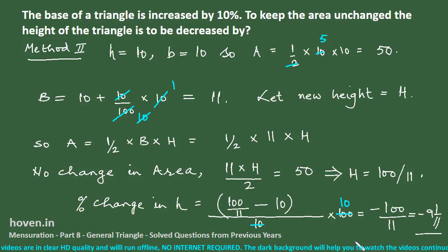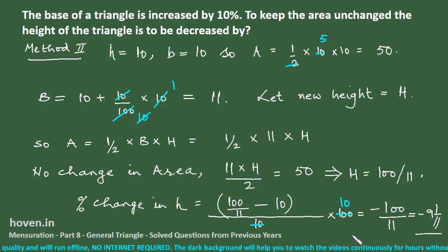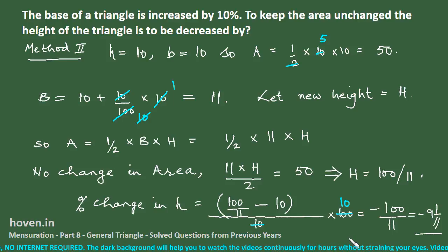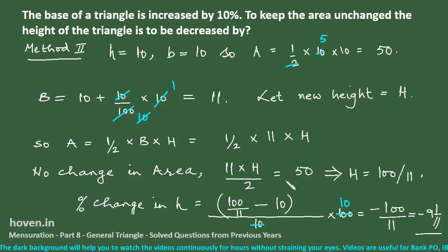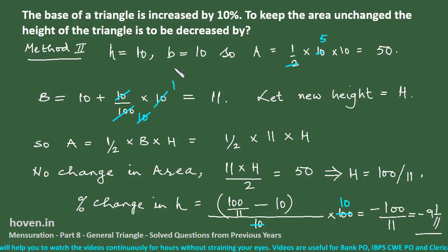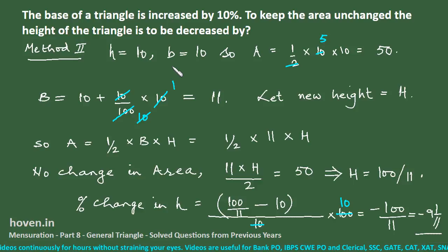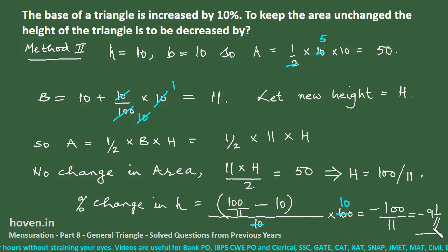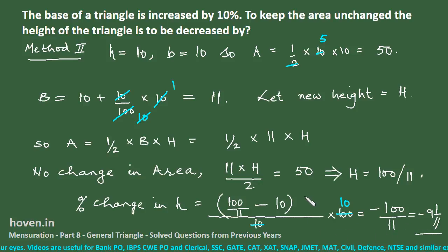The same answer is obtained by the second method. You can follow either method. If you remember the formula, use Method 1. If not, assume specific values for height and base, then proceed. The percent decrease in height is 9 1/11 percent. Let us move to the next question.